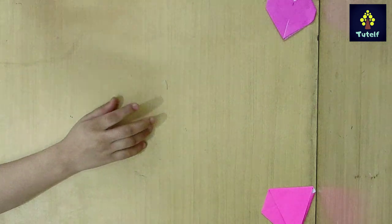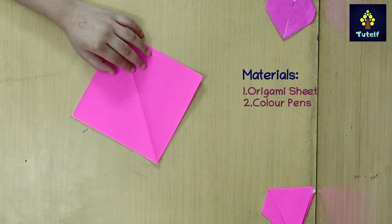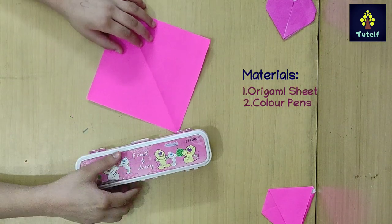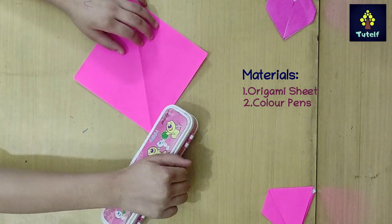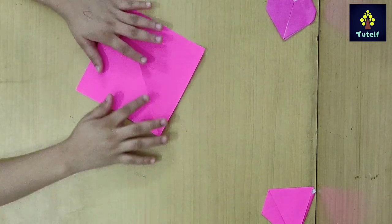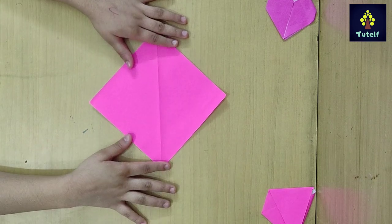We need origami paper and pen. We have all the pencils in this pencil box. First we need to fold the paper.